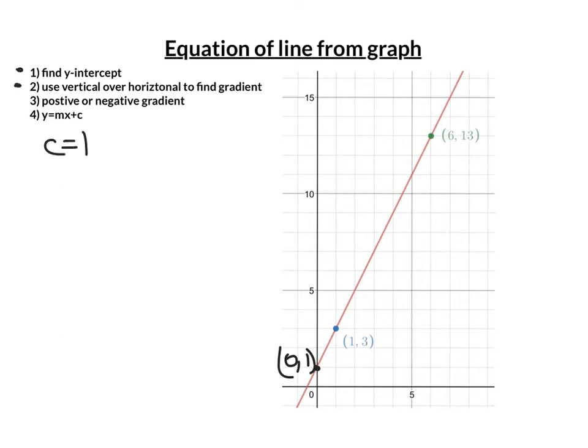Let's now work out the gradient. Our formula is m equals the vertical distance over the horizontal. As before, I need to make a right-angled triangle between the two points I'm given.